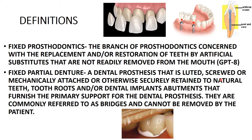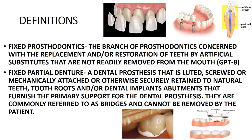The prosthesis is otherwise securely retained to natural teeth. The abutment is the most important element of FPD — it can be a natural tooth, an implant, or a tooth root. They are securely retained to natural teeth or dental implant abutments that furnish primary support for the dental prosthesis. FPDs are commonly referred to as bridges and cannot be removed by the patient.